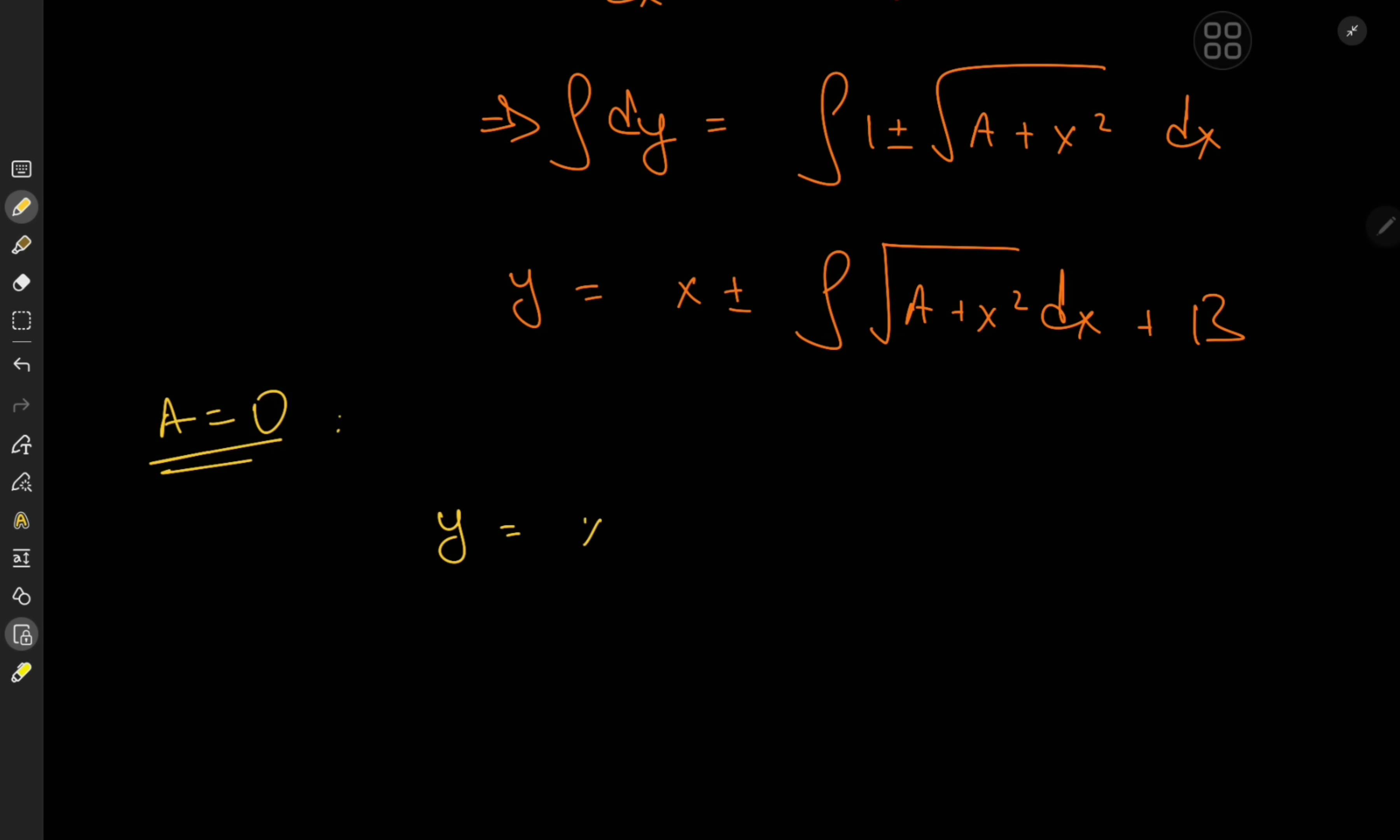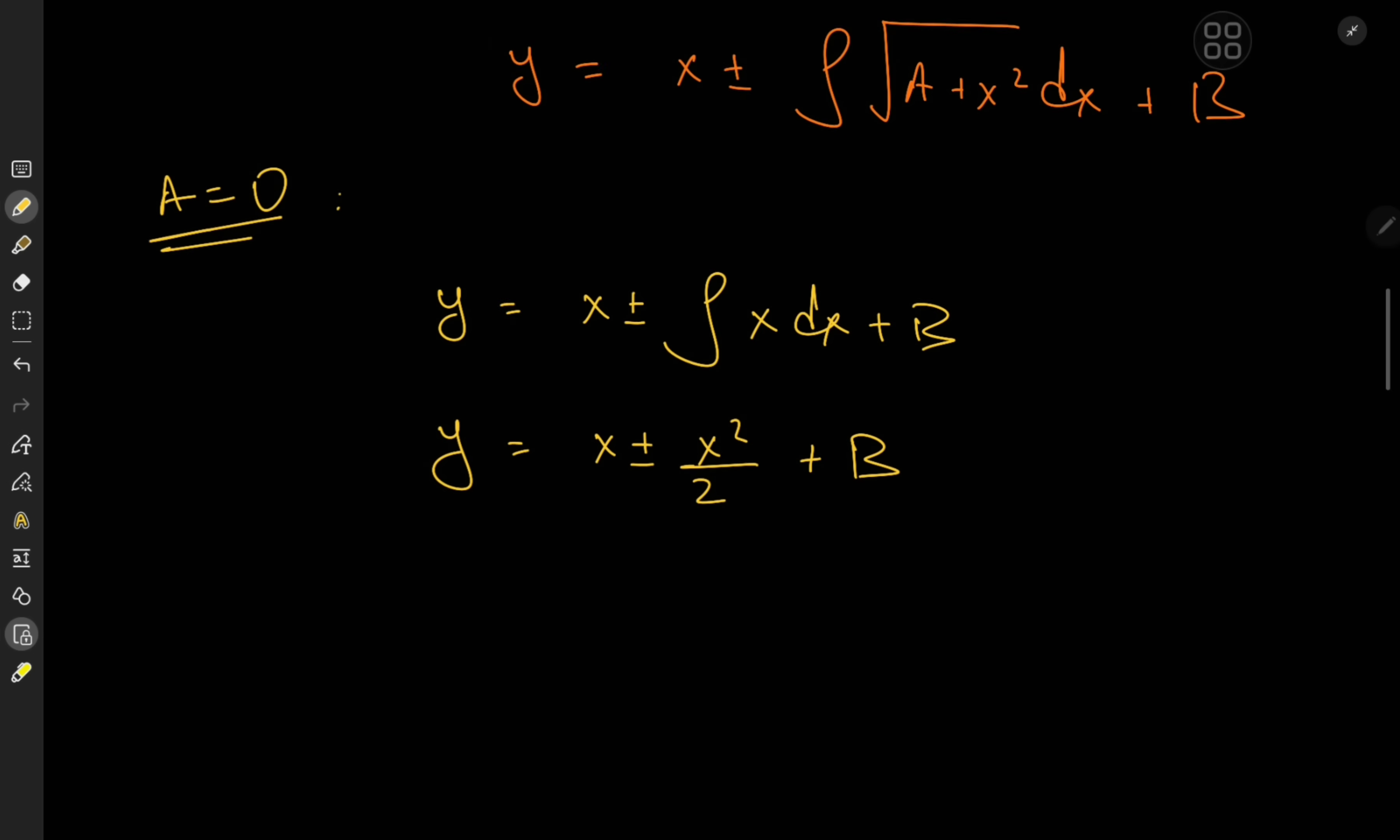So the easiest case is for a equal to zero. In that case y equals x plus or minus integral of √(x²), so I'm just going to get x dx plus b. So in this case we have y equals x plus or minus x²/2 plus the constant of integration b, which doesn't look all that bad, but it is kind of boring.